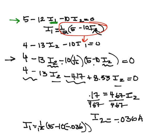And when we put that in a calculator, you get 0.45 amps. Okay, and then we know that I3 is just I1 plus I2.